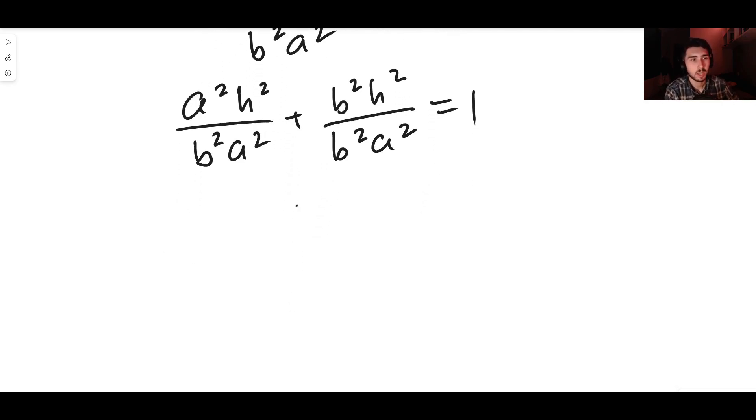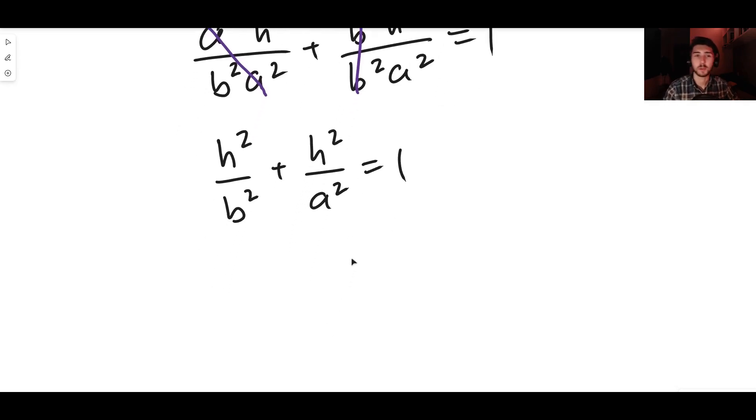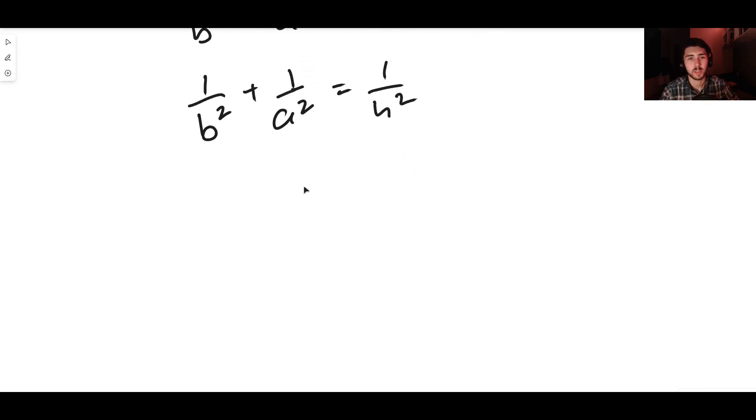Notice how the a squared will cancel out here and the b squareds will cancel out there. What you end up with is h squared over b squared plus h squared over a squared equals one. We can then divide both sides by h squared: we get one over b squared plus one over a squared equals one over h squared.